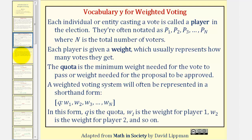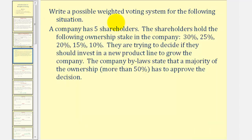Let's take a look at an example. We want to write a possible weighted voting system for the following situation. A company has five shareholders. The shareholders hold the following ownership stake in the company, given here as percentages. They are trying to decide if they should invest in a new product line to grow the company.